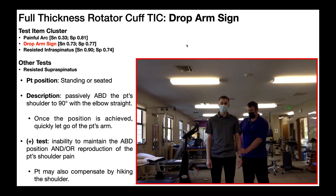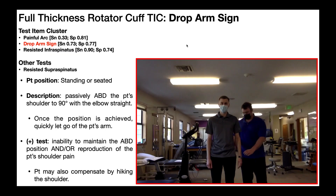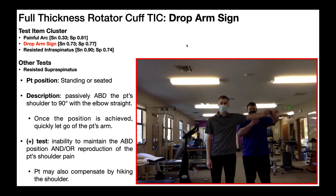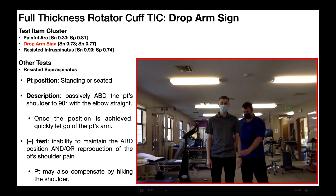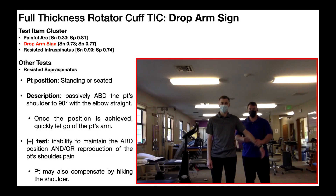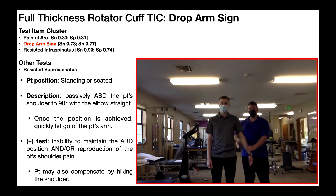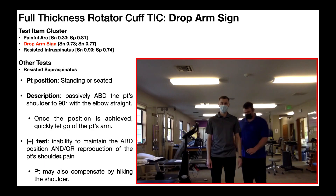One more point on a positive test: if I let go and the patient is able to maintain the position, but gets reproduction of familiar shoulder pain, that is still a positive test. The criteria are inability to maintain the position and/or reproduction of shoulder pain. Despite being able to hold the arm up, the fact that it reproduces familiar shoulder pain suggests rotator cuff pathology — it may just be more minor and not producing much weakness yet.